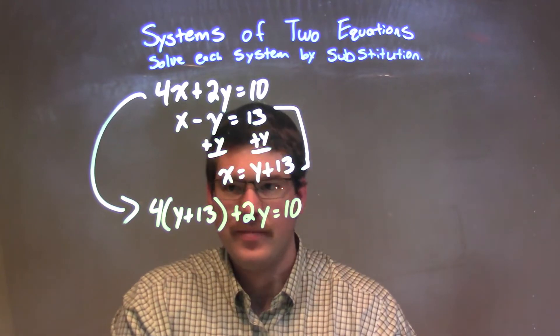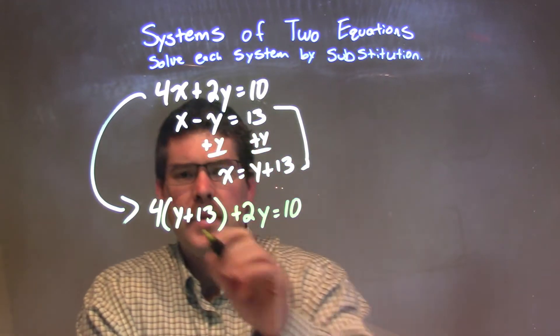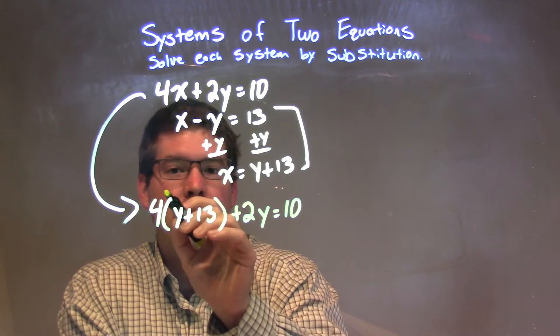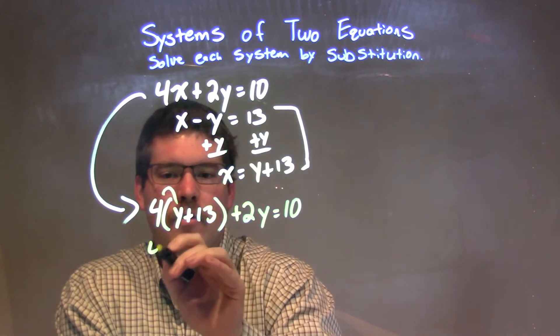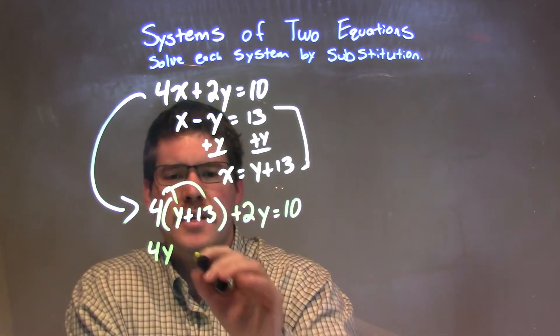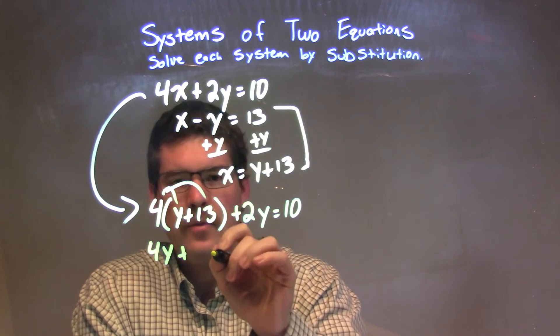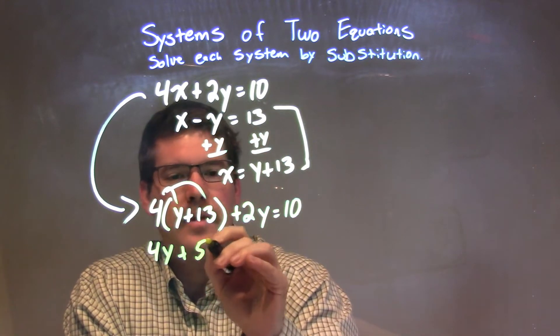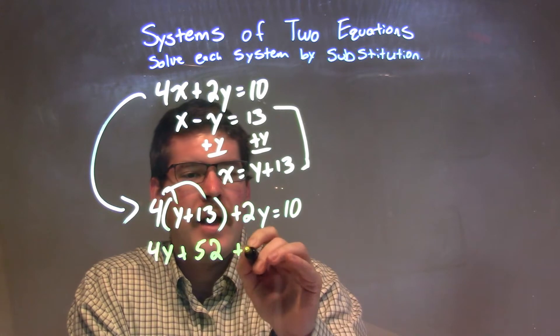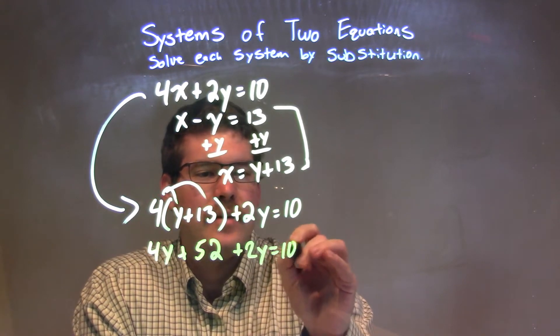And from here, I'm going to solve for y. I have to distribute the 4 across. 4 times y is 4y, and 4 times 13 is what? 4 times 10 is 40 plus 4 times 3 is 12, so 52. We have 52 there, and then we add 2y, and that's equal to 10.